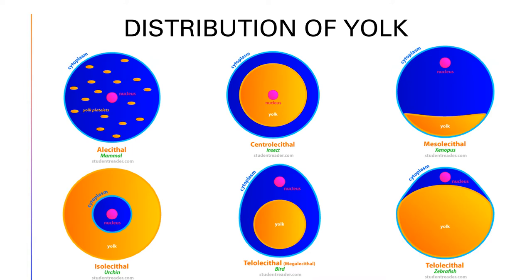This image is a representation of how the distribution of yolk looks. We have alecithal and telolecithal, where you have the nucleus at the middle and yolk platelets, usually in mammals. For centrolecithal, the nucleus and yolk are centrally located. The mesolecithal has a small amount of yolk. The isolecithal has a large amount of yolk, as seen in sea urchins. The telolecithal, also known as megalecithal, is for birds, and telolecithal also applies to zebrafish.